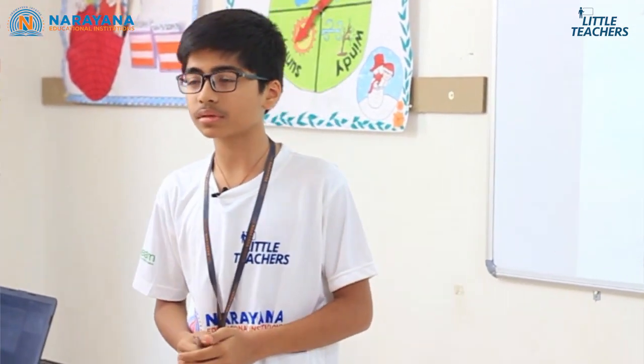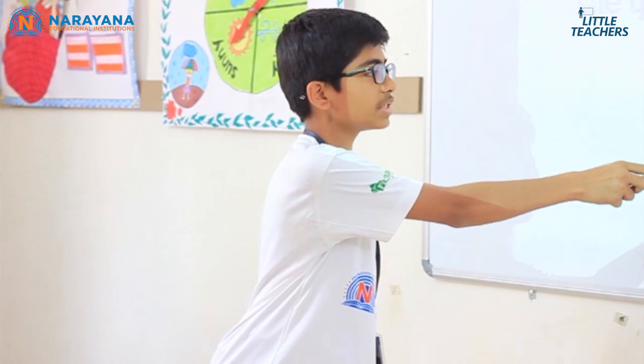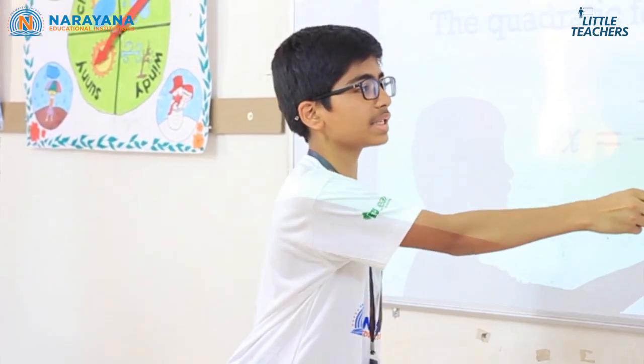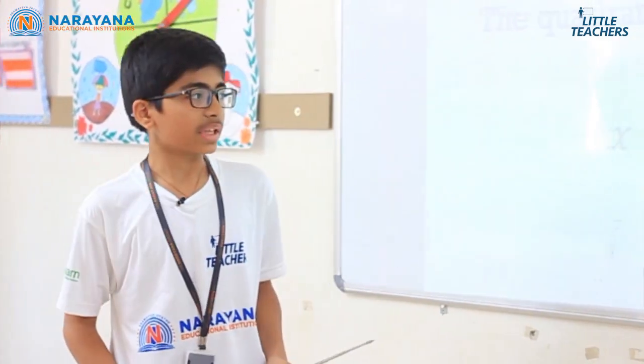Now let us move on to the subtopic: the relation between roots and coefficients of a quadratic equation. The quadratic formula to find the value of x is: x = (−b ± √(b² − 4ac)) / 2a.